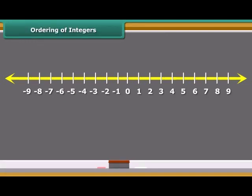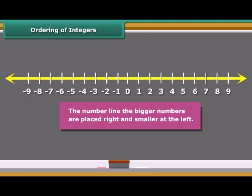Let us again observe the integers which are represented on the number line. We know that 9 is greater than 5 and on the number line 4 points right of 5. Similarly, 5 is greater than zero, so placed right to it. Since zero is to the right of minus 2, it is greater than minus 2. Again, minus 2 is on the right of minus 7, so minus 2 is greater than minus 7. Thus, we see that on the number line, the bigger numbers are placed right and smaller at the left.